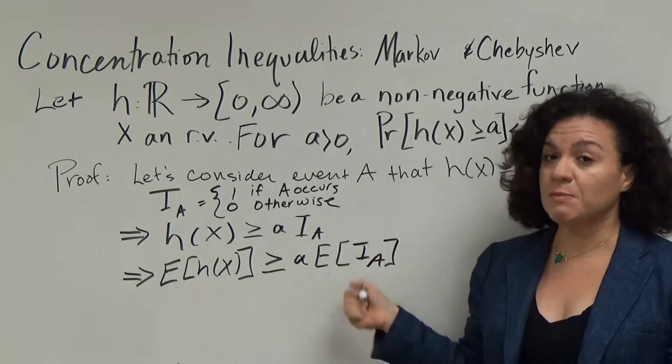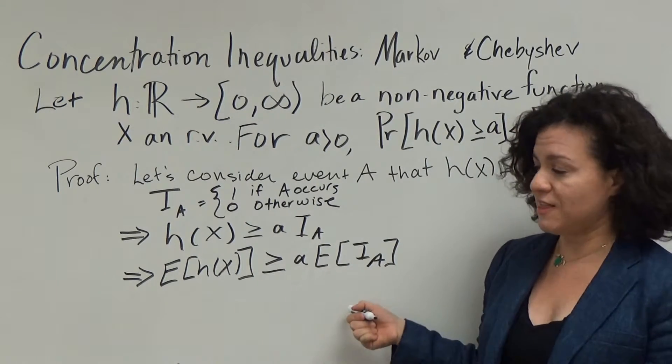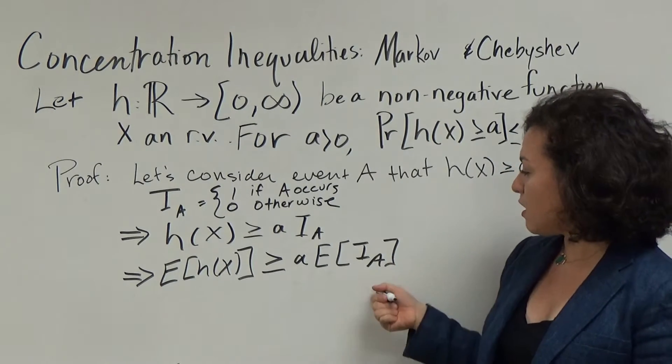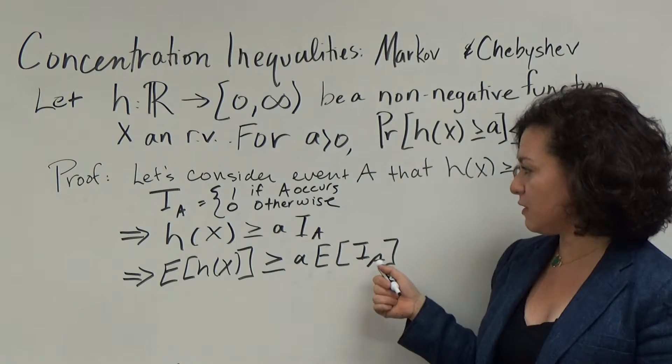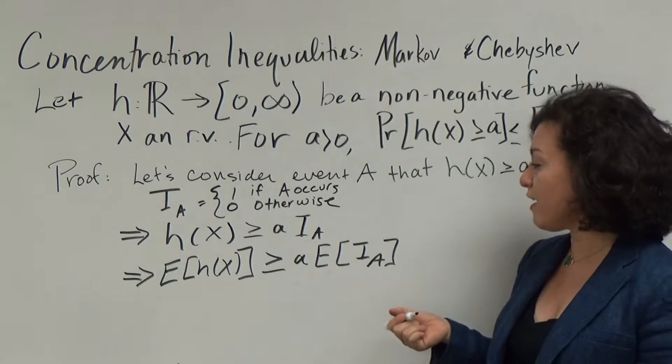Recall that the expectation of an indicator variable is equal to the probability of the event that it's indicating. We can see this again by recalling that if the indicator is 0, we don't worry about it. And if the indicator variable is 1, it's just going to be times the probability of the event occurring.